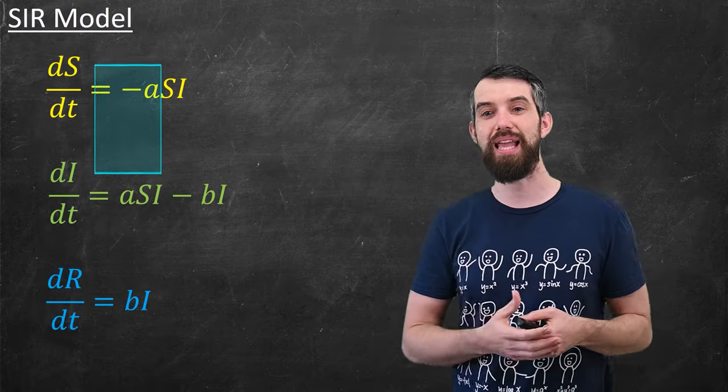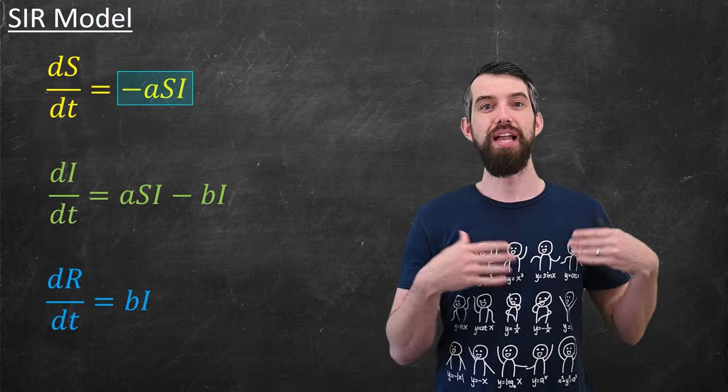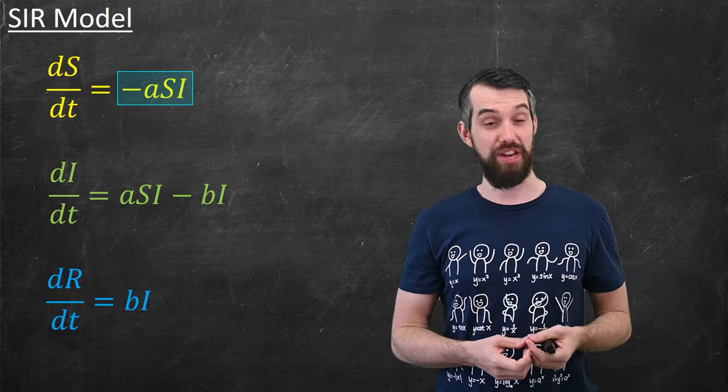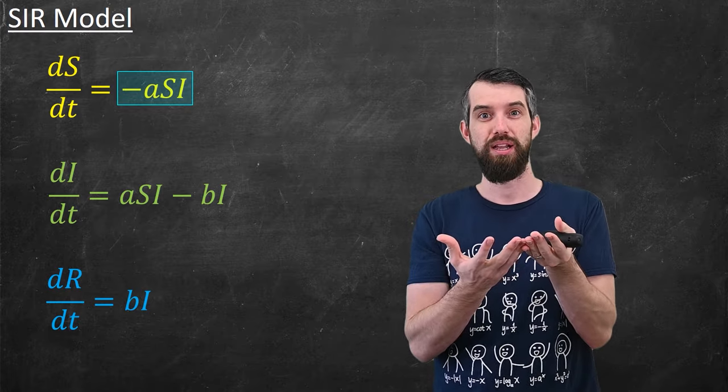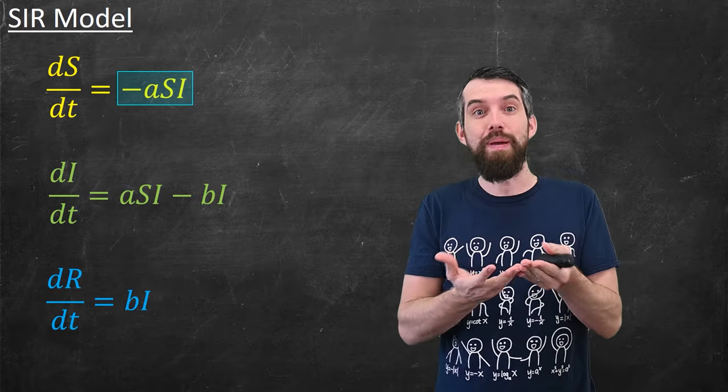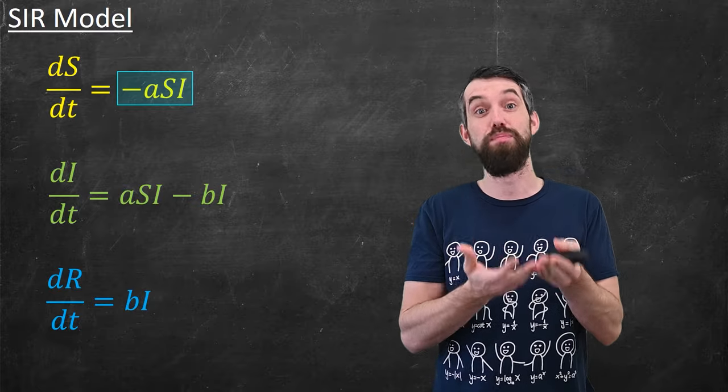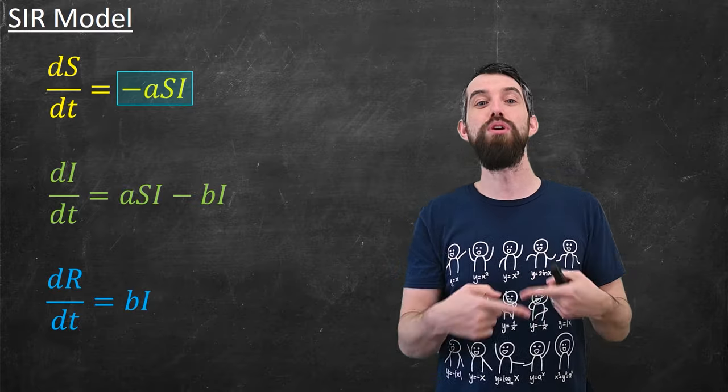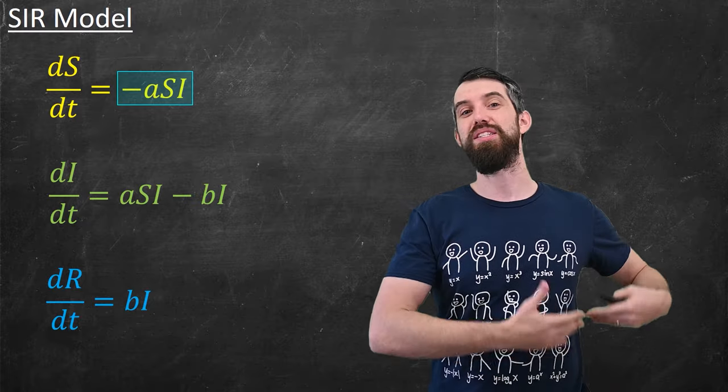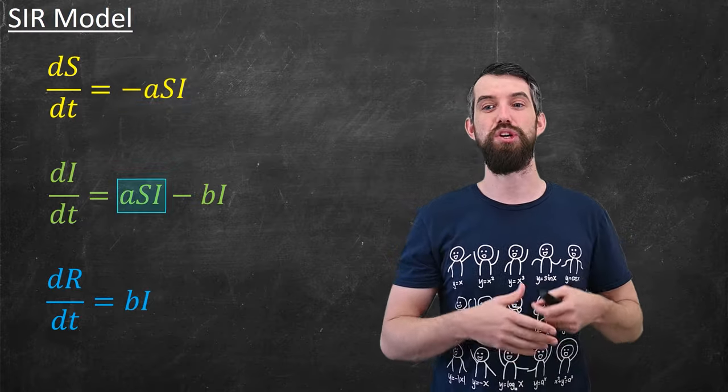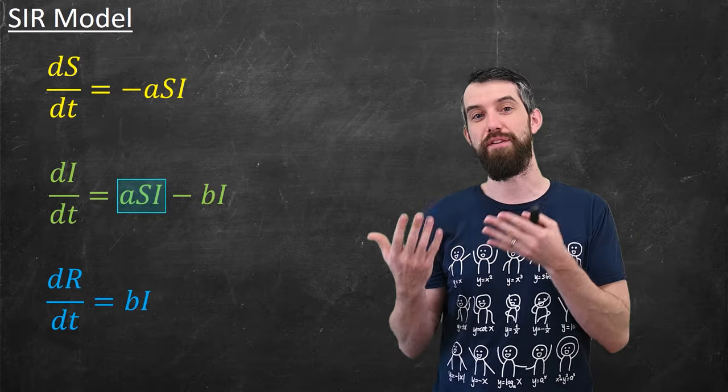Then for the equations, we begin with this minus aSI term. The idea is that every time you have an interaction between a susceptible person and an infectious person, those interactions are more likely based on the number in both of those classes multiplied together, then a proportion a of those are going to become infectious. Then if that is the numbers that are leaving the susceptible terms, you get the addition of those in the infectious category.